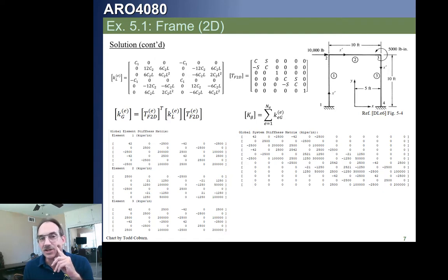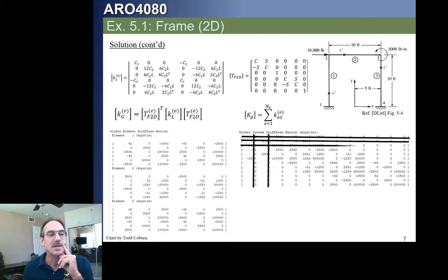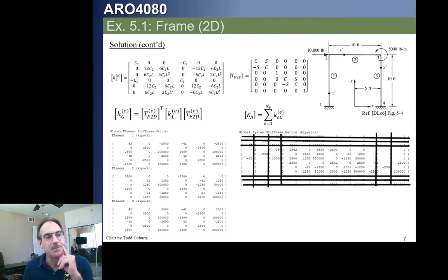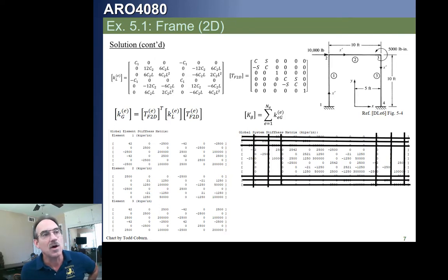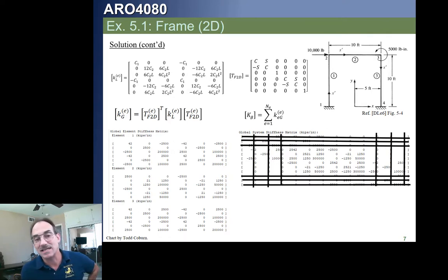Node 1 is fully constrained, so those rows and columns are removed. Node 4 is also fully constrained, so those rows and columns are removed as well. That leaves us a reduced system of equations. Nodes 2 and 3 are free in the axial direction, transverse direction, and rotational direction. At node 2, we have a force in the global x direction, with everything else zero. At node 3, with x to the right and y up, we have a positive z moment, and the other two force values are zero. We can now use these to solve the reduced system and obtain our displacements.